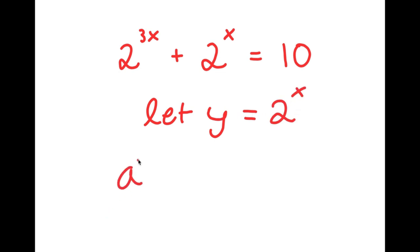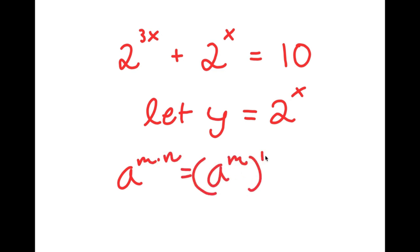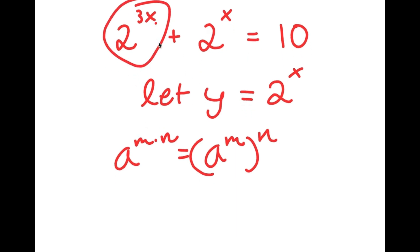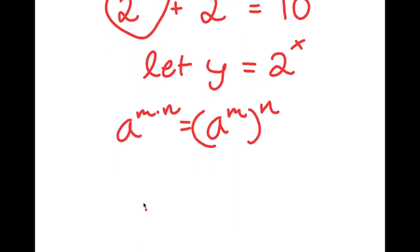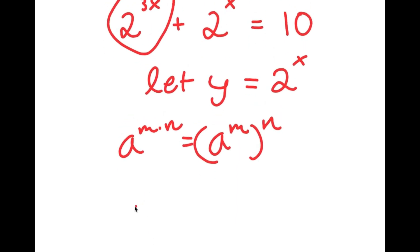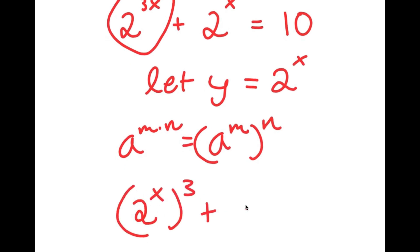Now, if I have something in the form a to the power of m times n, this is equal to a to the power of m to the power of n. So 2 to the power of 3x is going to equal 2 to the power of x, to the power of 3. Now I have this plus 2 to the power of x is equal to 10.